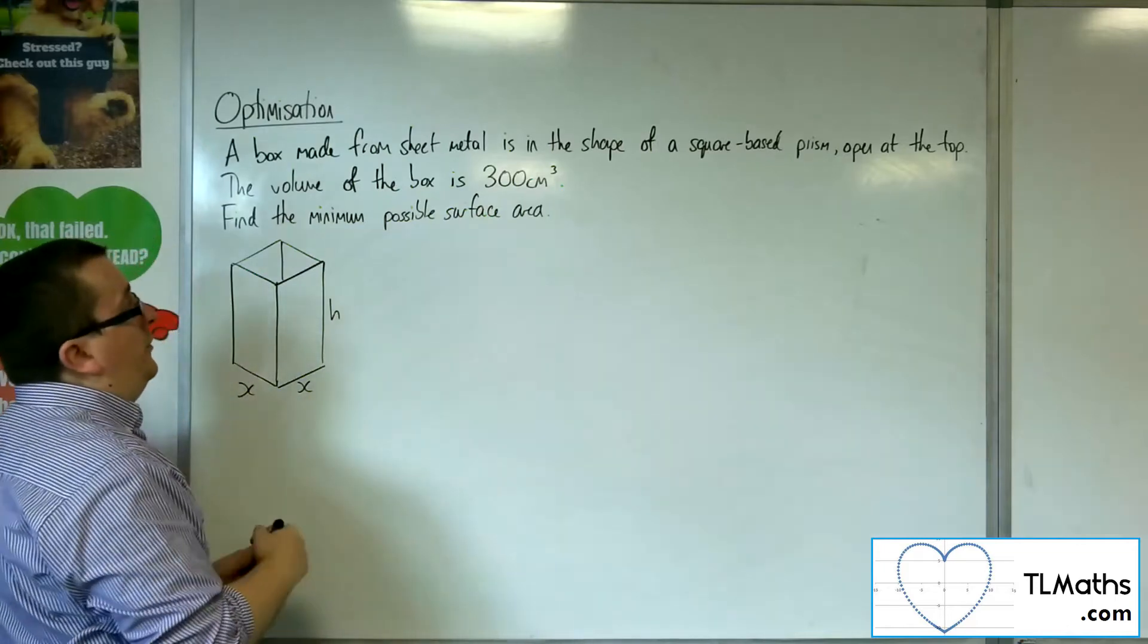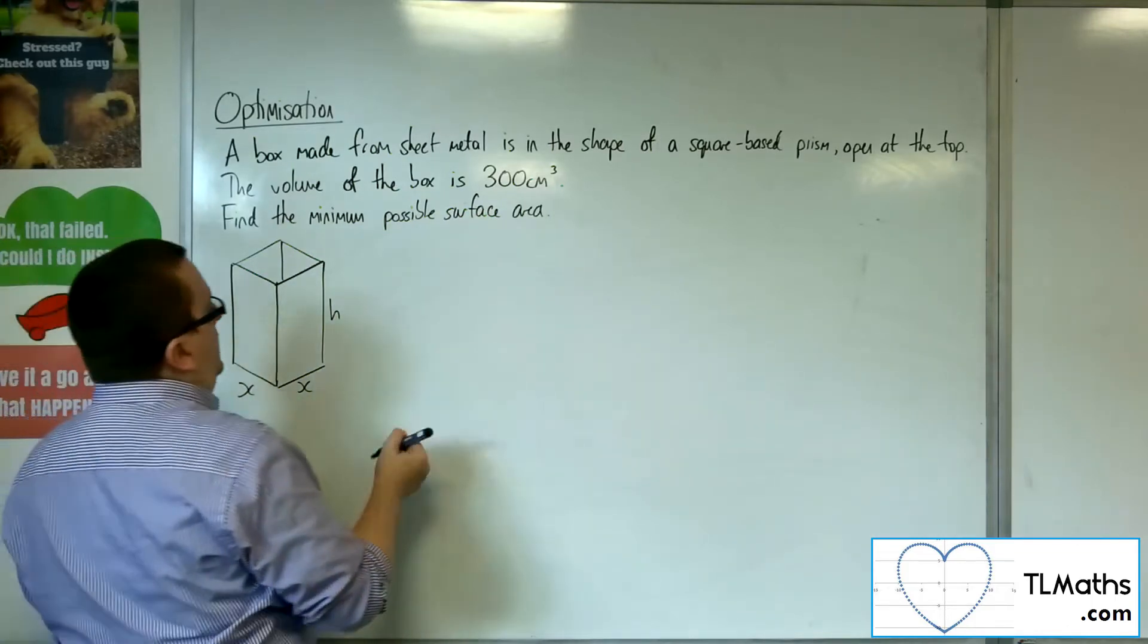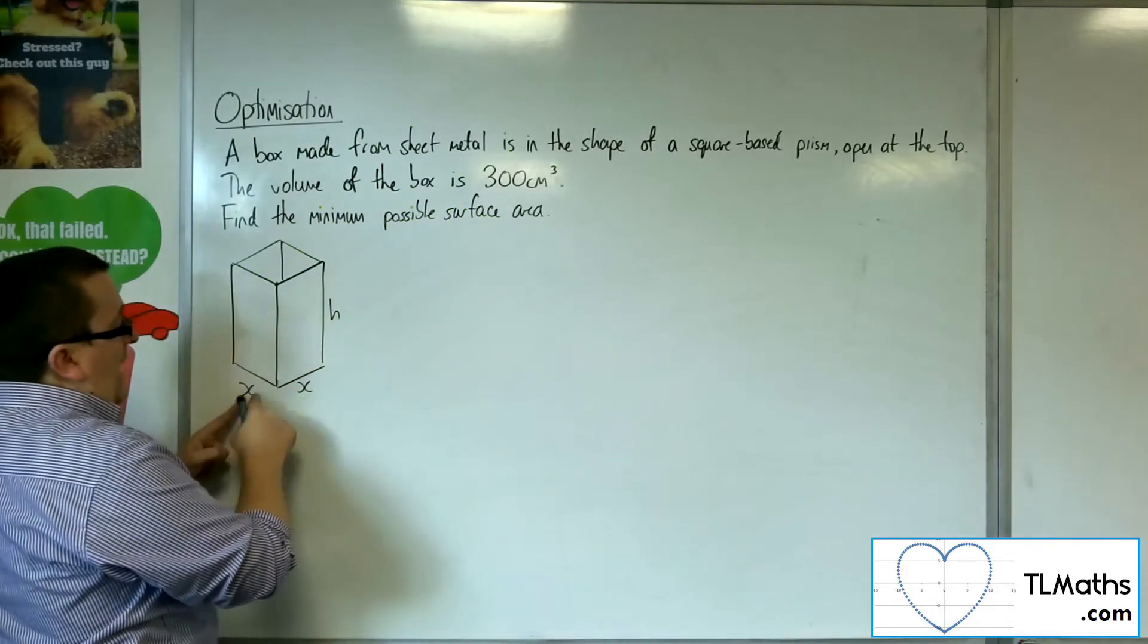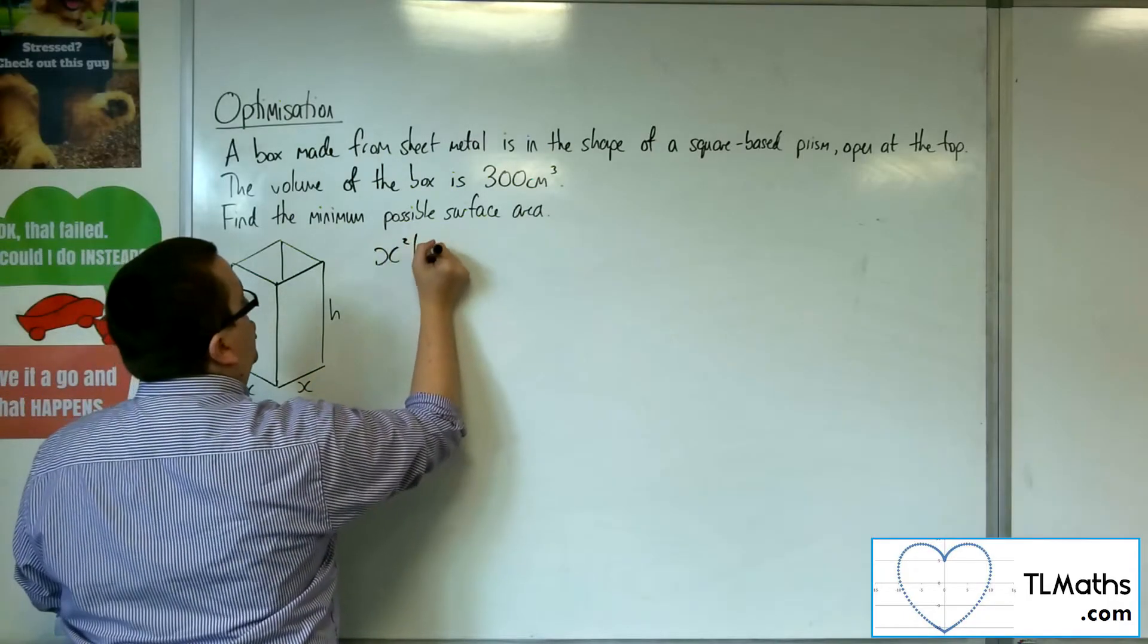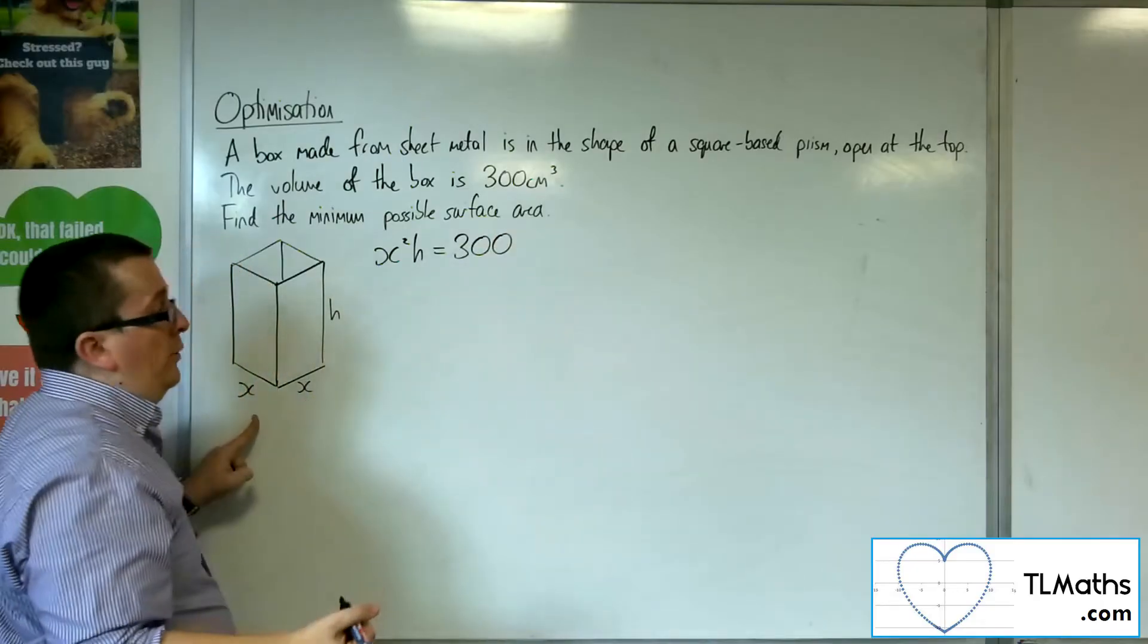We're told the volume of the box is 300 cubic centimeters. So that would be x times x times h. So x squared h will be 300. That's what I'm told.